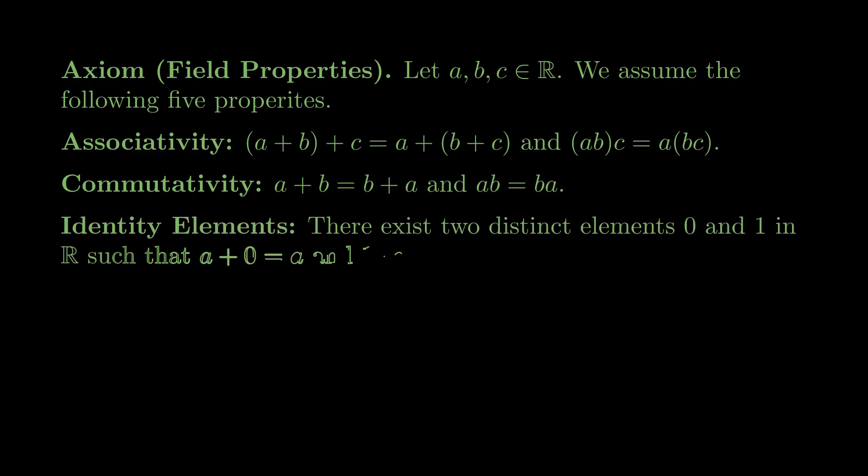Identity elements: there exist two distinct elements, call them 0 and 1, in the real numbers, such that a + 0 = a, and 1 × a = a. We call 0 the additive identity, and 1 the multiplicative identity.